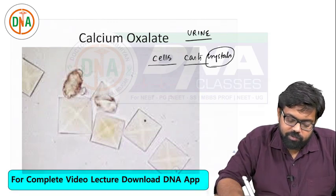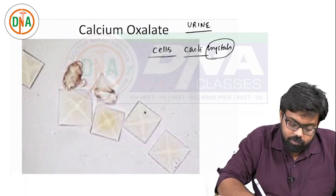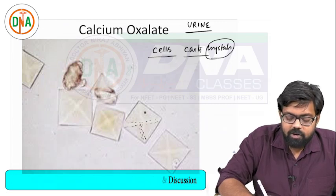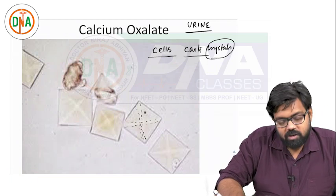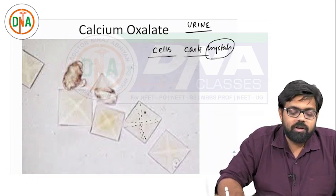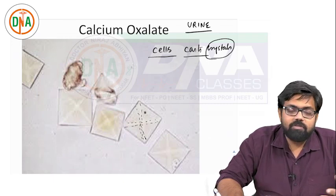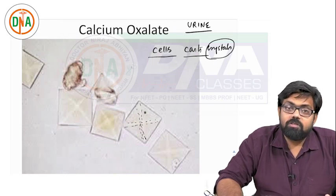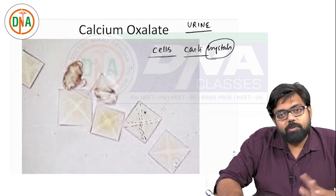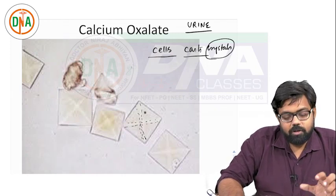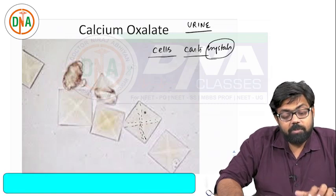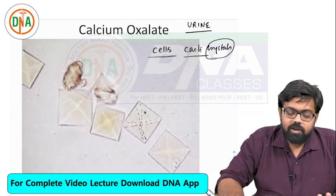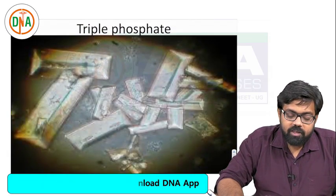Calcium oxalate crystals have a peculiar envelope shape. Envelope shape crystal is seen in calcium oxalate. The most common cause is a diet rich in oxalate like spinach and tomatoes. More intake of calcium can also cause calcium oxalate crystals. You may come across an MCQ giving a picture of this crystal and asking what stone the person may have. Envelope shape is seen in calcium oxalate.